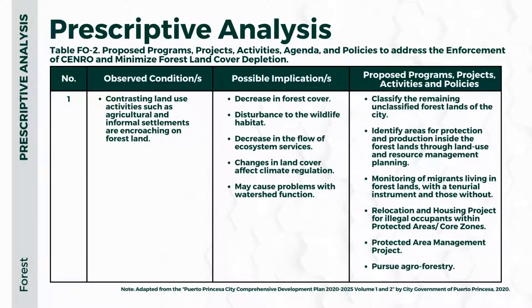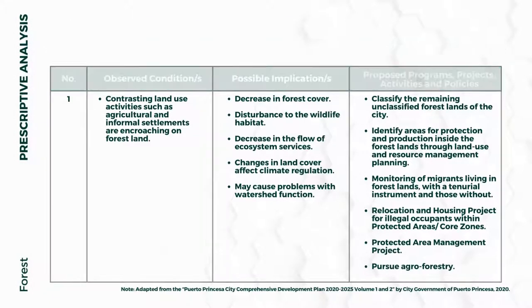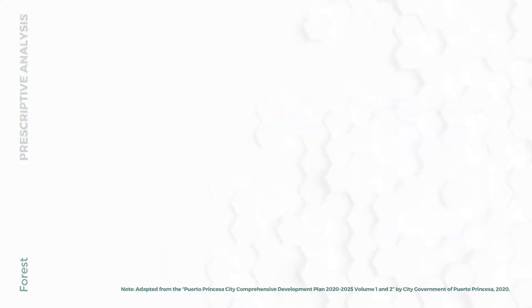The first observed condition is contrasting land use activities such as agricultural and informal settlements encroaching on forest land, with possible implications of decreased forest cover, disturbance to wildlife habitat, decrease in ecosystem flow, and changes in land cover affecting climate regulation. Proposed programs include: classifying remaining unclassified forest lands, identifying areas for protection, monitoring migrants living in forest lands, relocation and housing projects for illegal occupants, protected area management projects, and pursuing agroforestry.